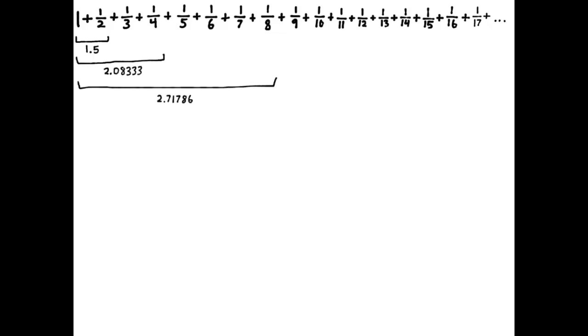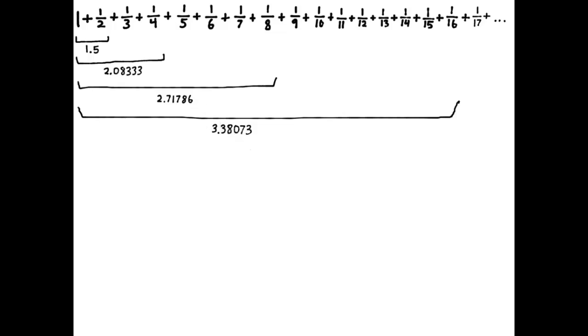Let's start by reviewing the idea of what it means to say a series is divergent. Here is the harmonic series, and we know this series to be divergent. What I mean is if I look at the partial sums — like 1.5, the sum of the first two terms, or 2.08333, or if you sum more terms you have 2.71786, or 3.38 — this sequence of partial sums is going to grow arbitrarily large. If you name any arbitrarily large number, I can find some number of terms that adds up to more than that number.